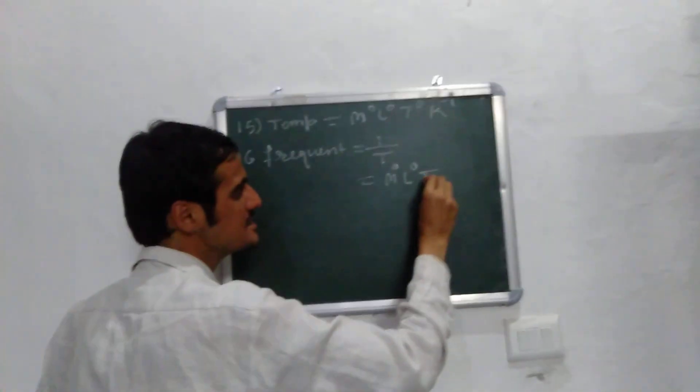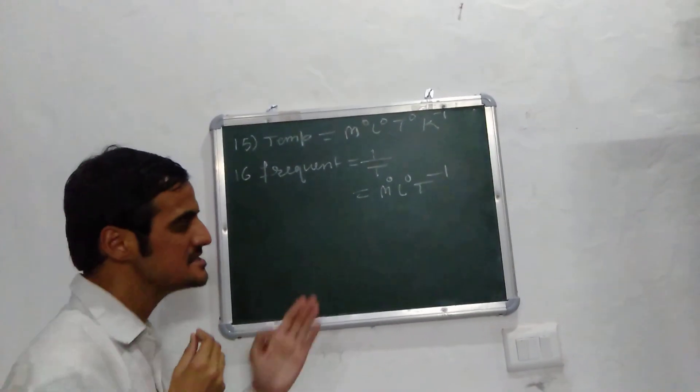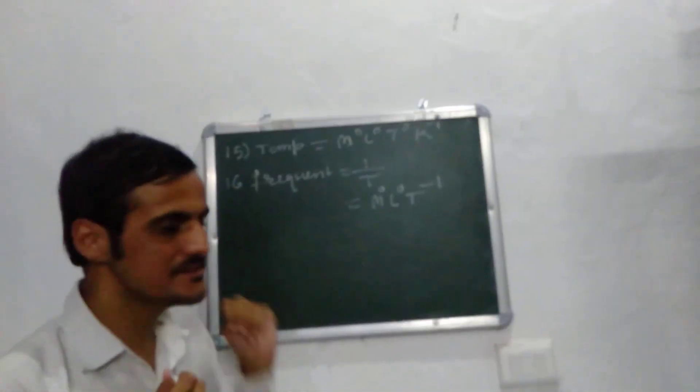The next physical quantity is frequency. The reciprocal of time is known as frequency. So the dimensional formula is M0 L0 T-1 — that is T raised to the power minus 1. This is the dimensional formula of frequency.